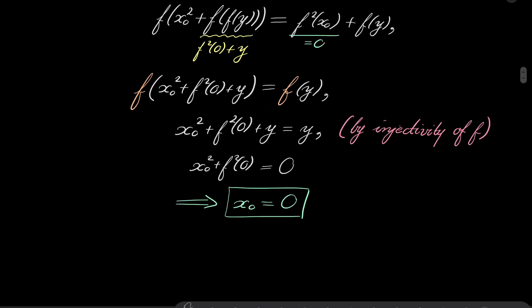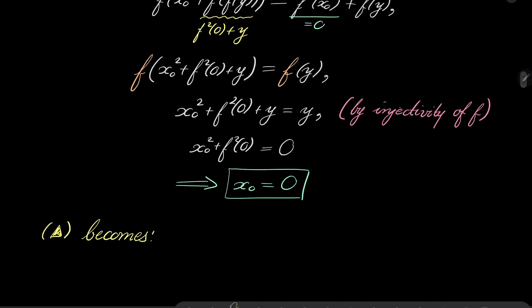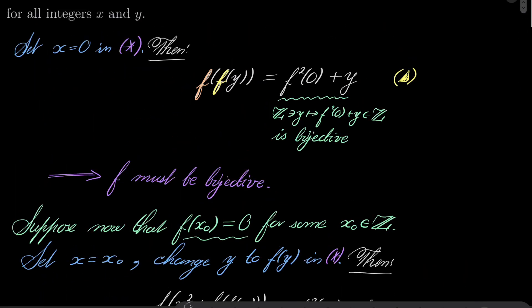So, our condition triangle has become the following: f of f of y equals y. So our function is involution. Let's go back to our original function equation.